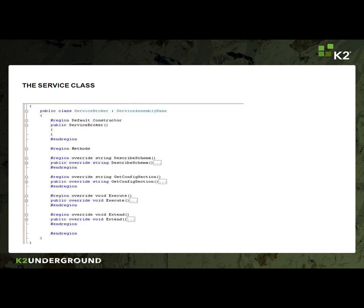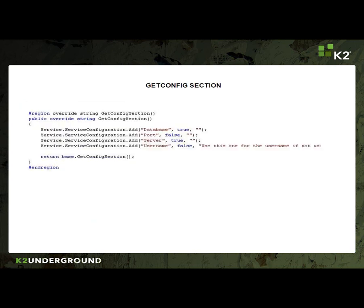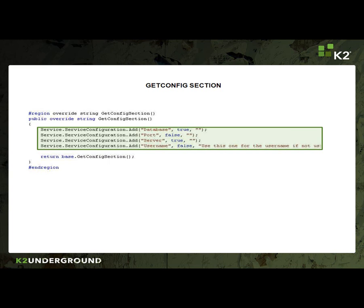Here's a quick snapshot of our service class. You can see there's obviously more code here, but I've shrunk it down just so you can see the different sections where we override each one. Next, you can see in more detail the get config section. You can see here that we've also specified parameters for database, port, server, and user name.